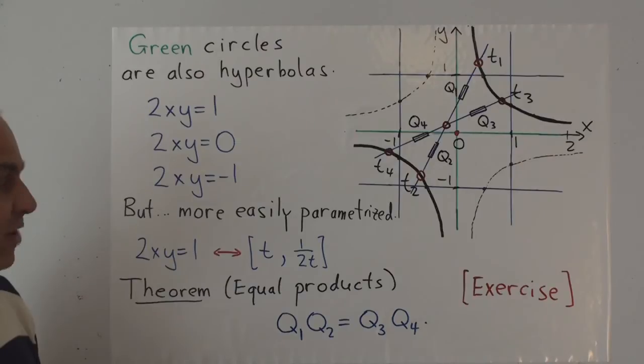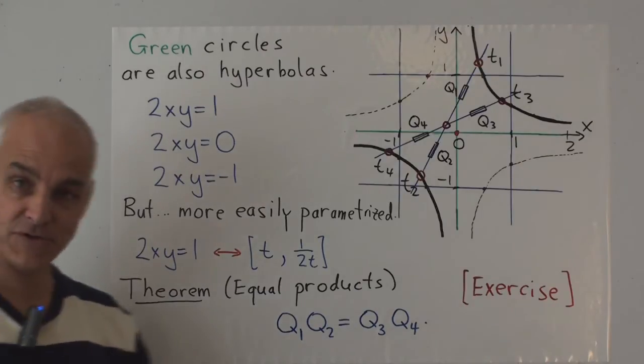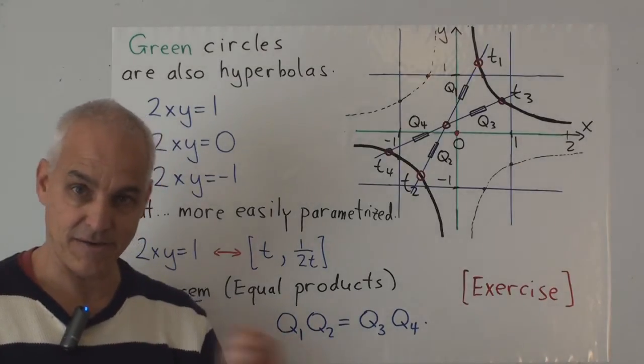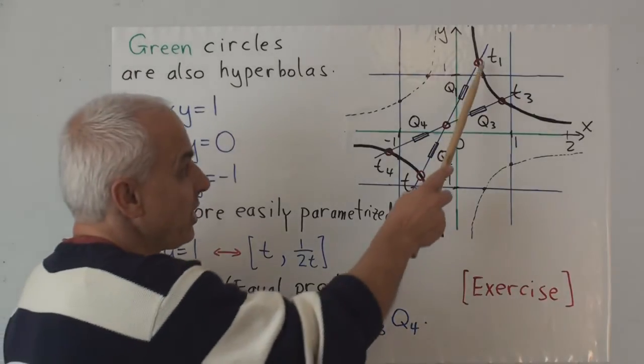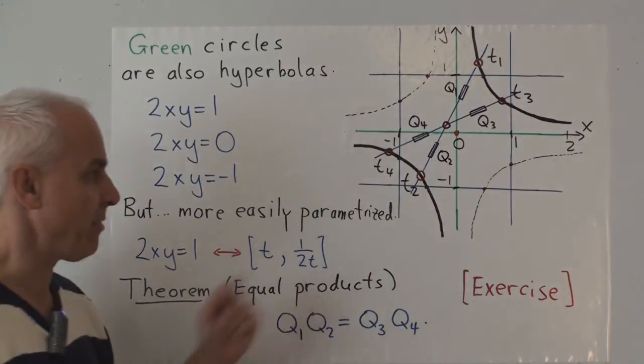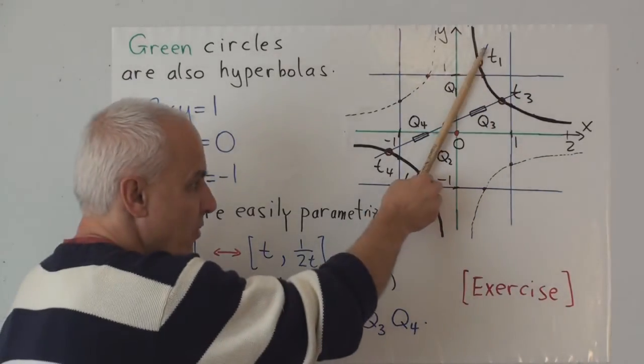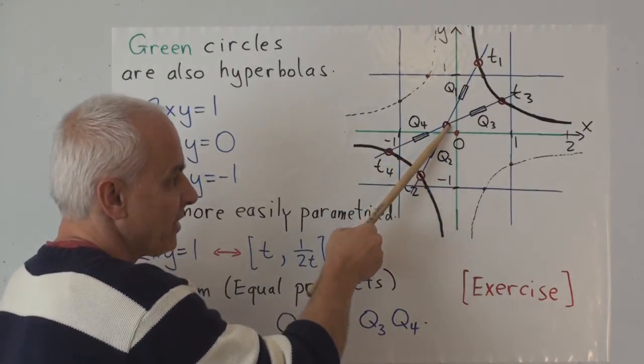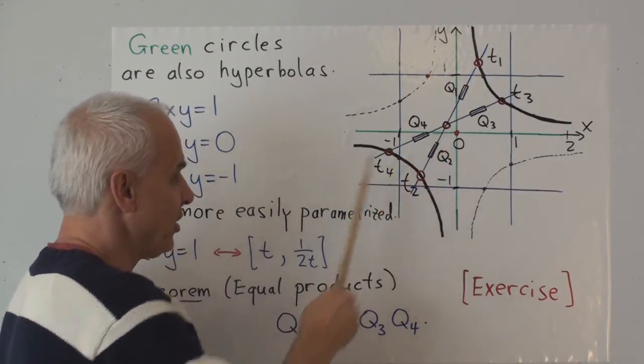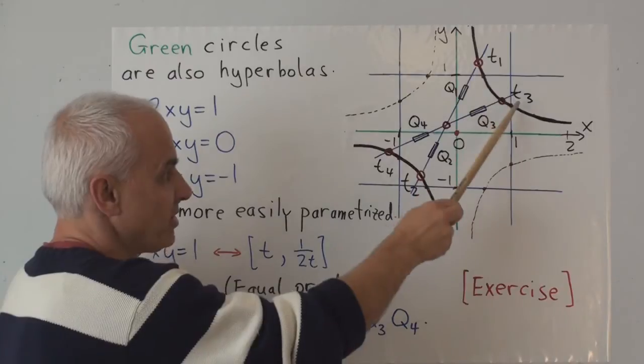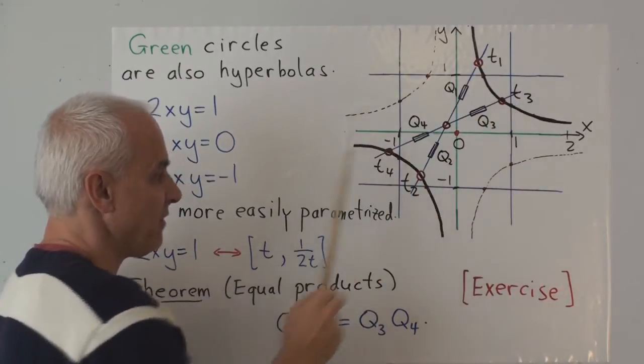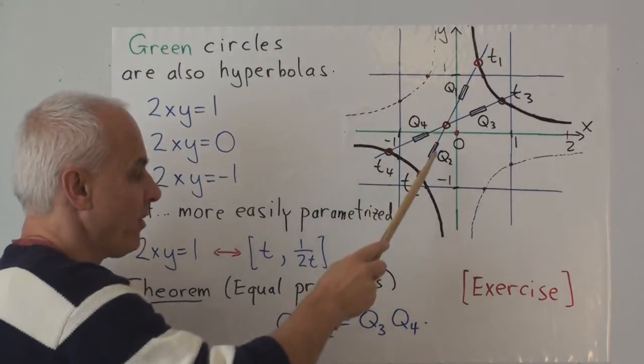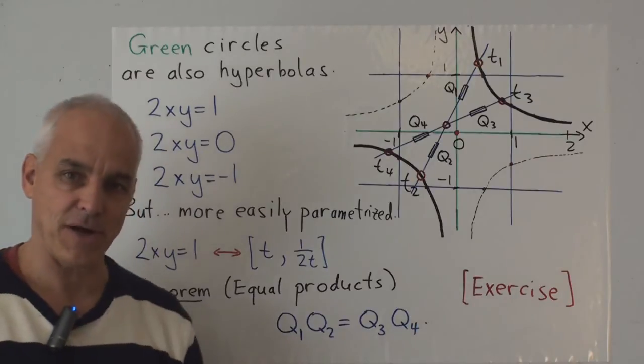The statement is then that the product of Q1 times Q2 equals the product between Q3 and Q4. And I suggest that you try proving it in both ways, first following the Wildtrig 10 video, and also by doing it directly by using this parametrization, calculating the equations of this line, calculating this point of intersection in terms of the arbitrary constants T1, T2, T3, T4, and then computing these quadrances and computing both sides of these equations.